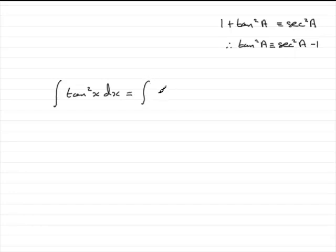This becomes now sec squared, not a obviously, but the angle that we're using is x. So it's sec squared x minus 1. Don't forget to put this in brackets. We've got a couple of terms here. We need to treat it like it were 1. And then this is integrated with respect to x.